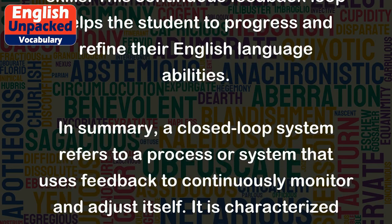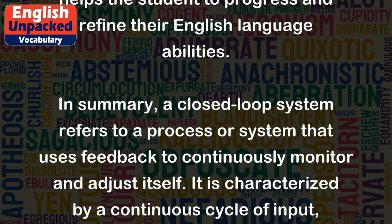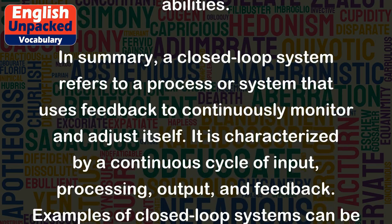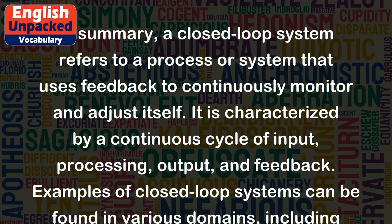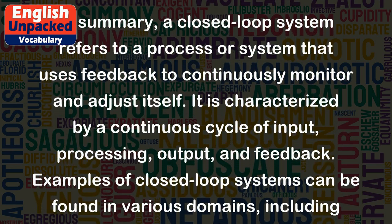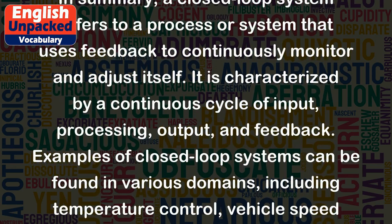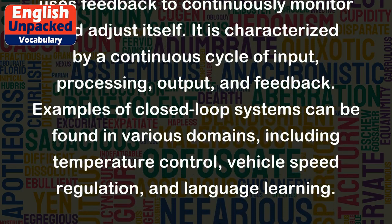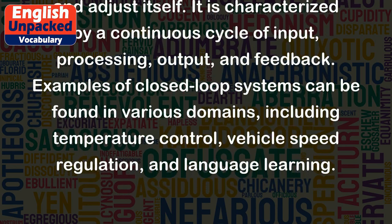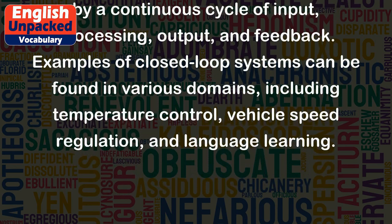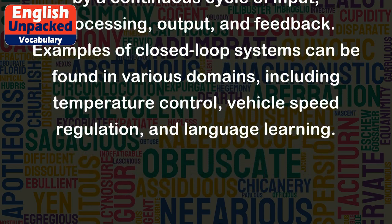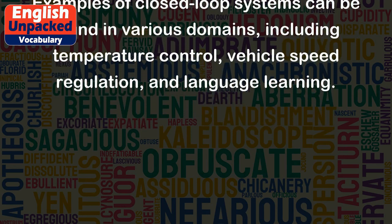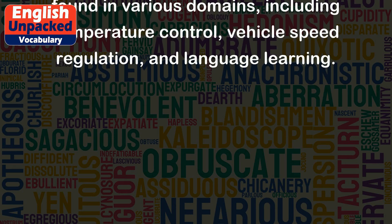In summary, a closed loop system refers to a process or system that uses feedback to continuously monitor and adjust itself. It is characterized by a continuous cycle of input, processing, output, and feedback. Examples of closed loop systems can be found in various domains, including temperature control, vehicle speed regulation, and language learning.